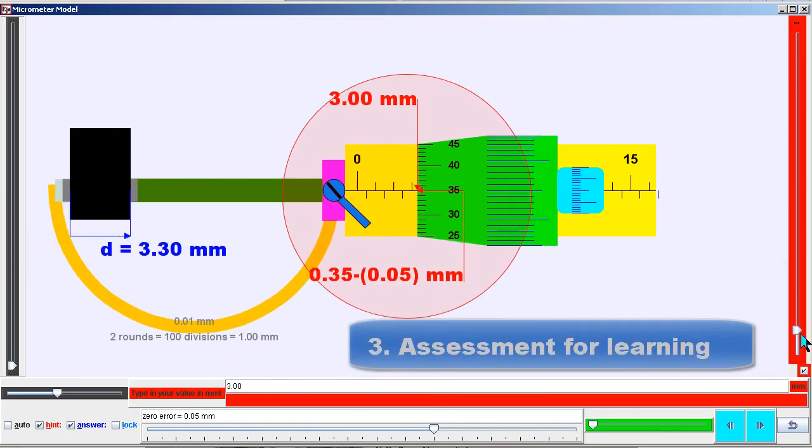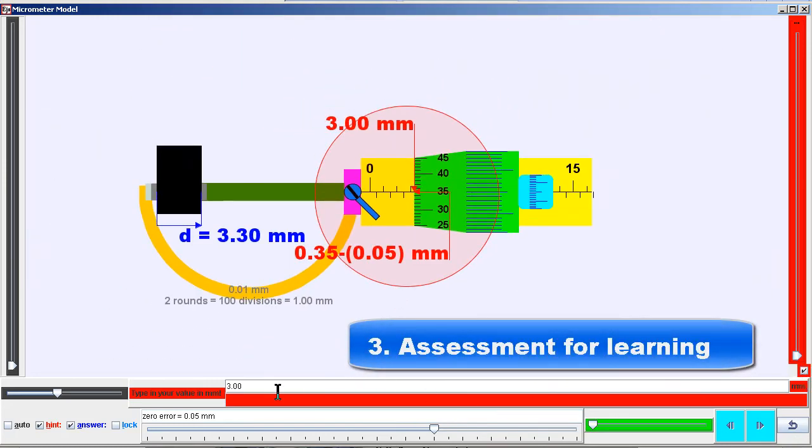The third design feature is assessment of learning in terms of an input checkbox. So if the student gets the answer wrong, there will be feedback to guide the student. And if the answer is correct, they will give appropriate positive feedback.